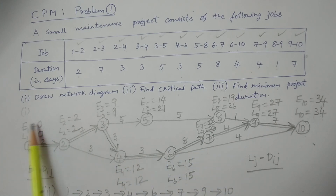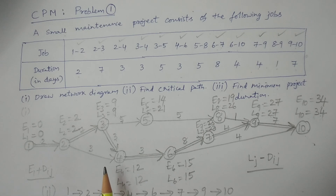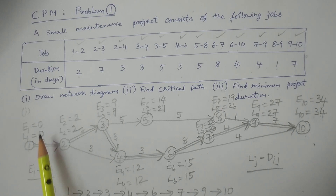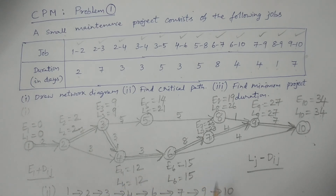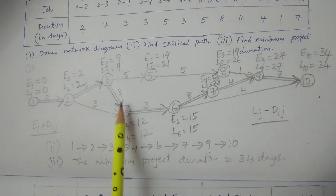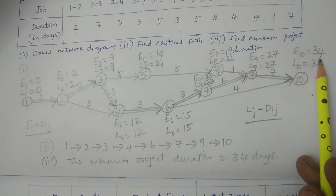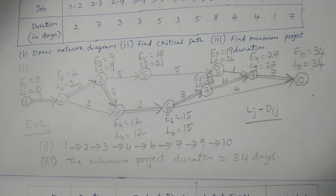After that, how to calculate E's and L's — that is earliest times and latest times. Both times are calculated using forward pass calculations and backward pass calculations. With the help of that, for which activity or event E is equal to L, we join those activities to obtain the critical path, indicated by a double line. The minimum duration is obtained at the end node.